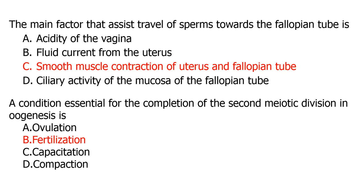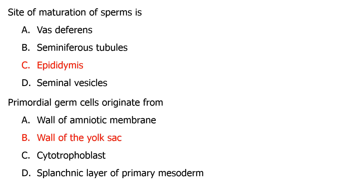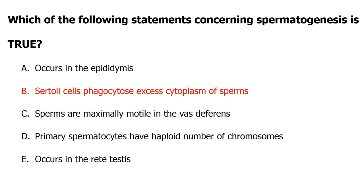A condition essential for the completion of the second meiotic division during oogenesis is fertilization. The site of maturation of sperm is within the epididymis, and the primordial germ cells originate from the wall of the yolk sac. Regarding spermatogenesis, Sertoli cells phagocytose excess cytoplasm from the sperm — that is true. Thank you very much; if there are any questions, you can leave them in the comment section below.